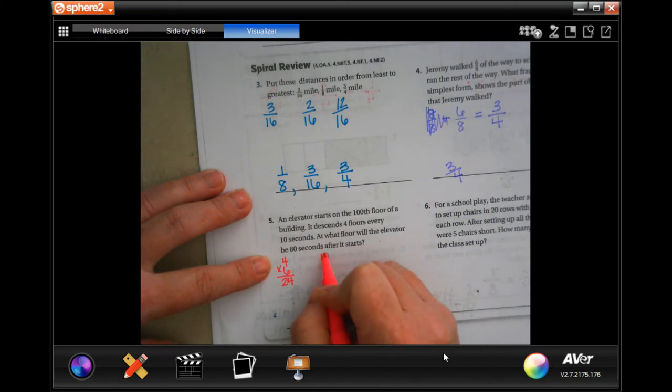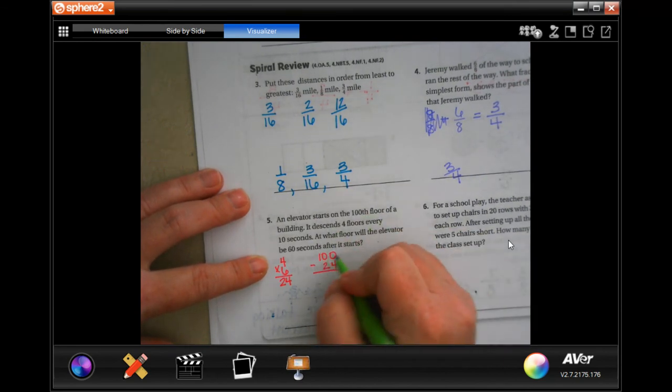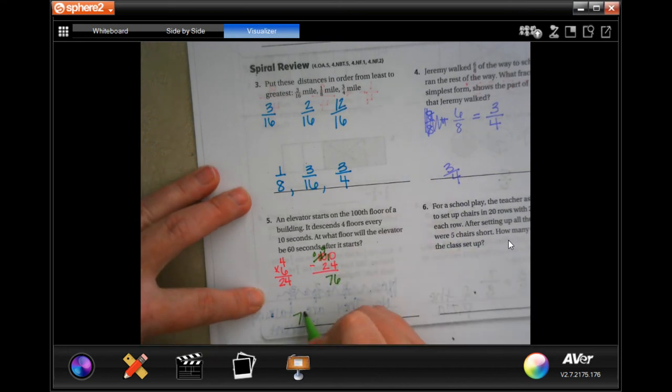So then if we do 100 and we go minus the 24, those zeros can't take away anything so I'm going to take that, make it a zero, that's going to be a 10. Then I need to borrow one of those making it a 9 and that a 10. 10 minus 4 is 6, 9 minus 2 is 7, 76th floor.